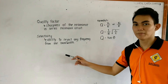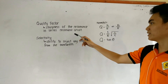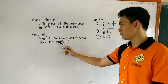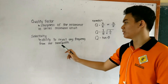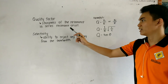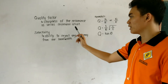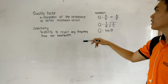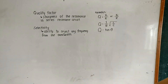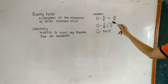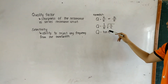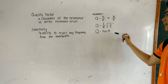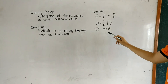To summarize: the quality factor is the sharpness of the resonance in a series resonance circuit, while selectivity is the ability to reject any frequency from the bandwidth. The difference between them is that quality factor can be measured quantitatively while selectivity cannot. The formulas are: quality factor equals XL over R or XC over R; quality factor equals 1 over R times the square root of L over C; and lastly, quality factor equals tangent theta.